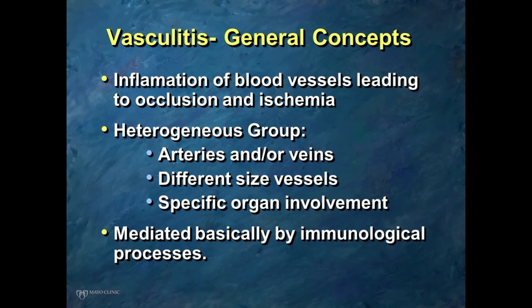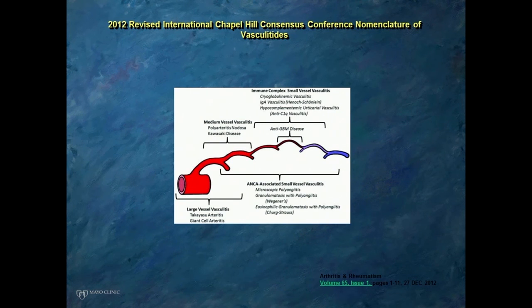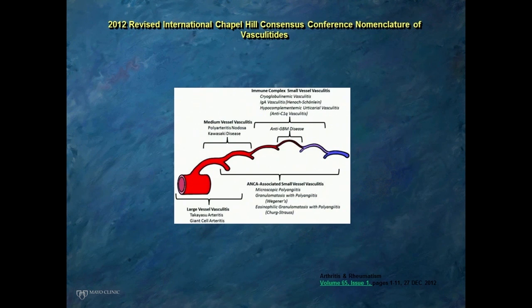Another important point is that all these are immune-mediated processes. This is a scheme of the classification consensus that took place in Chapel Hill, North Carolina in 2012. It basically divides the vasculitides depending on what is the predominant size of vessels affected. This is not exclusive — for instance, large vessel vasculitis such as Takayasu's and Giant Cell Arteritis predominantly affects the aorta and its large branches, but can also affect medium-sized vessels.